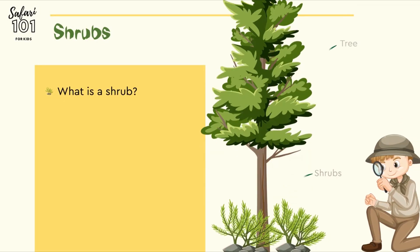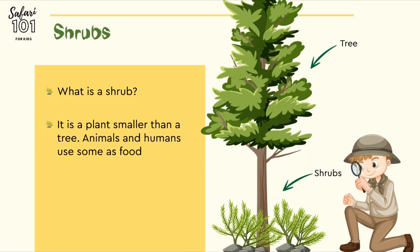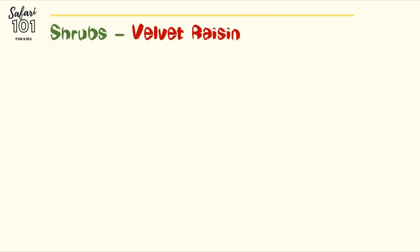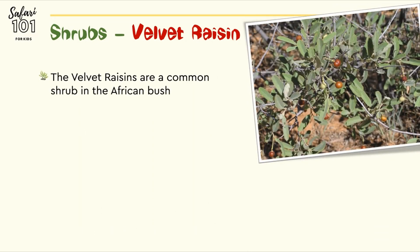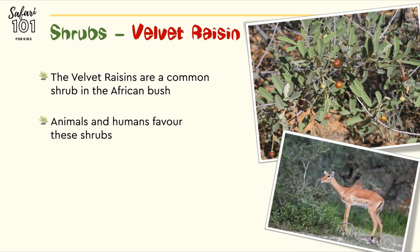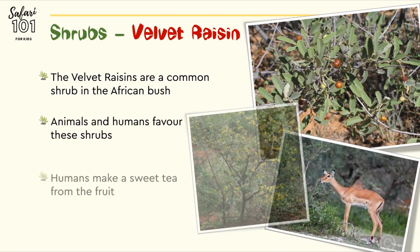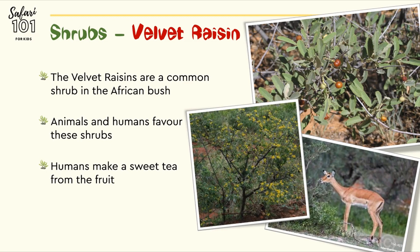What is a shrub? A shrub is a plant smaller than a tree. Animals and humans use it for food. It has roots, twigs and leaves. The velvet raisin is one of the more common shrubs we find in the African bush. Animals and humans favour these shrubs — humans make a sweet tea from the fruit and animals love to eat the fruit as well as the leaves.